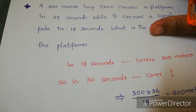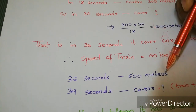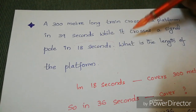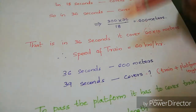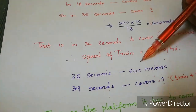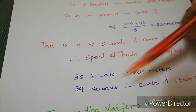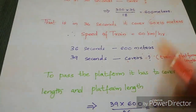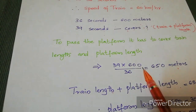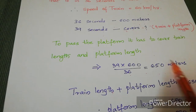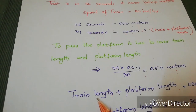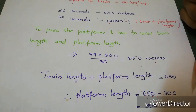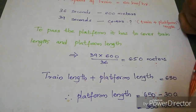Now, in 39 seconds the train crosses the platform, covering both train and platform lengths. Cross-multiplying: 39 × 600 ÷ 36 = 650 meters — this is the combined length of train and platform. Since the train length is 300 meters, the length of the platform is 650 − 300 = 350 meters.